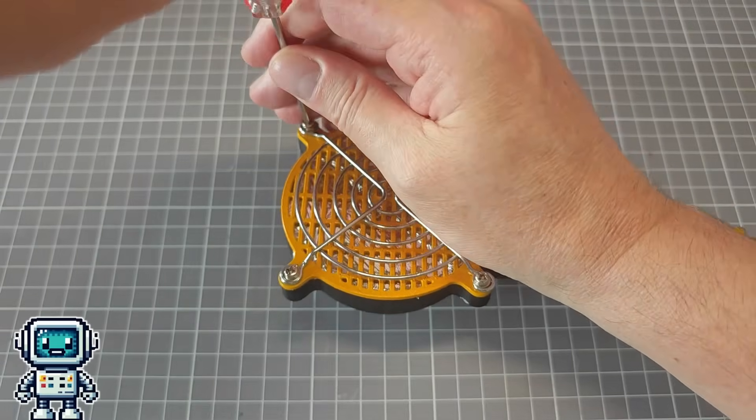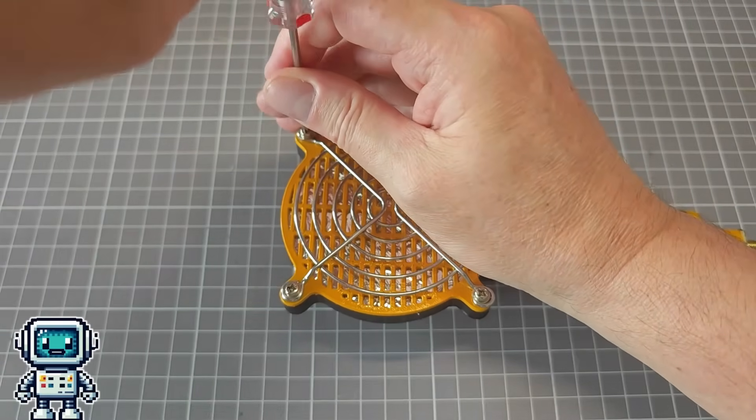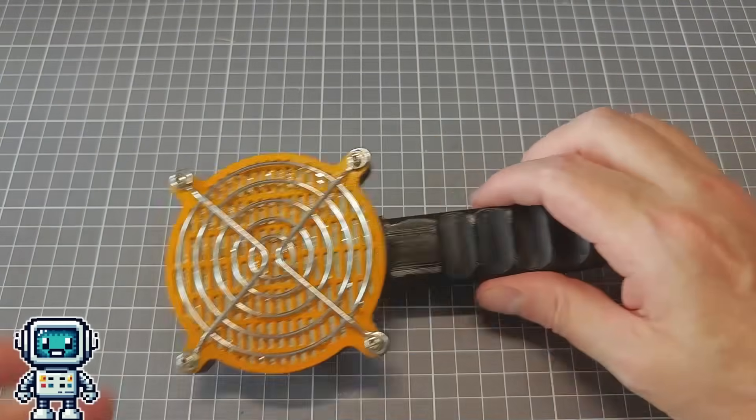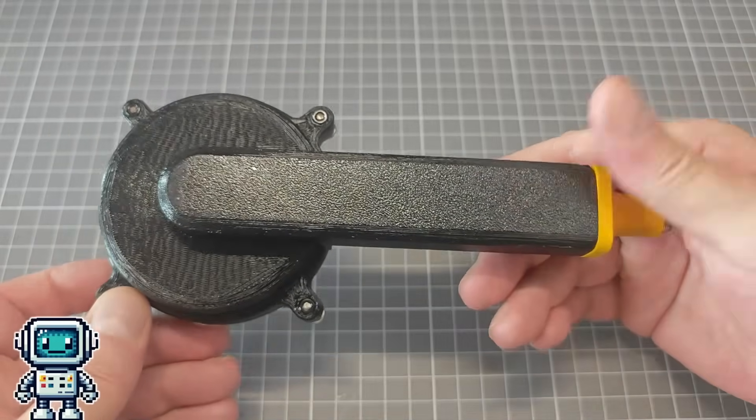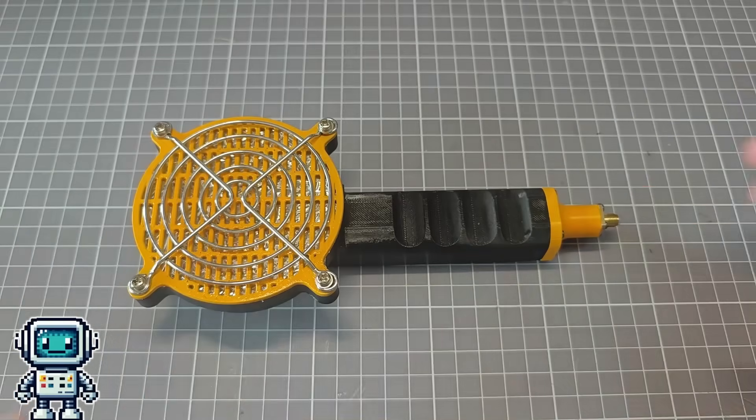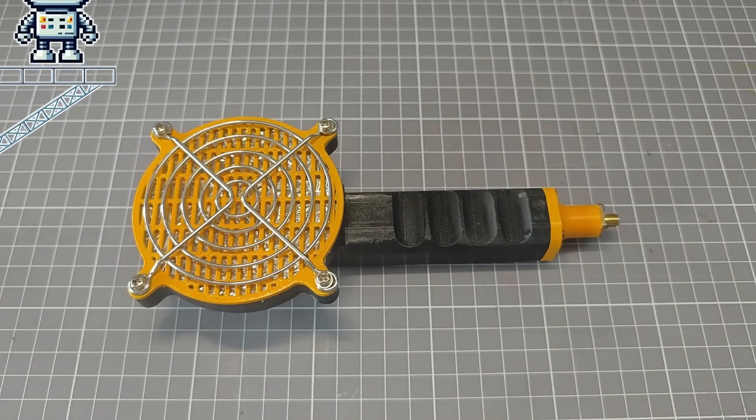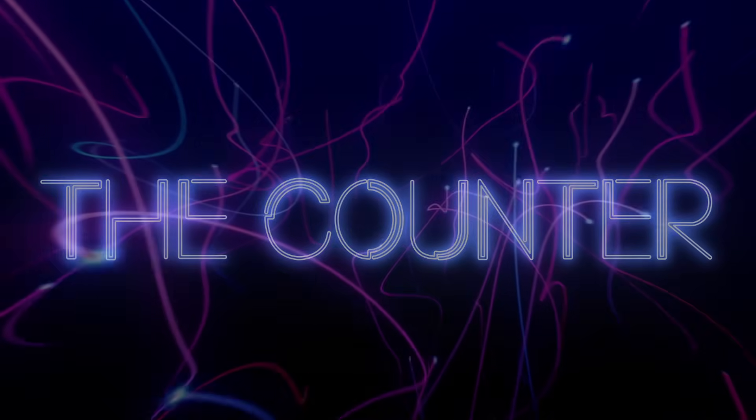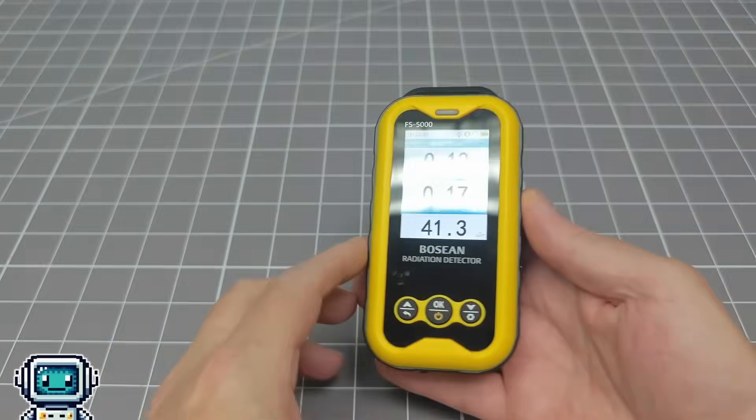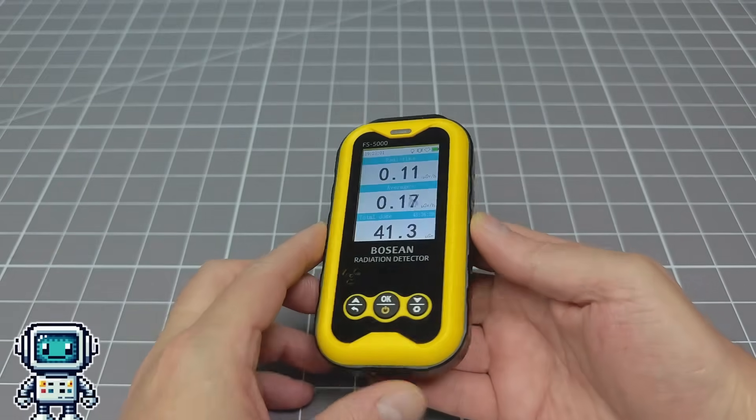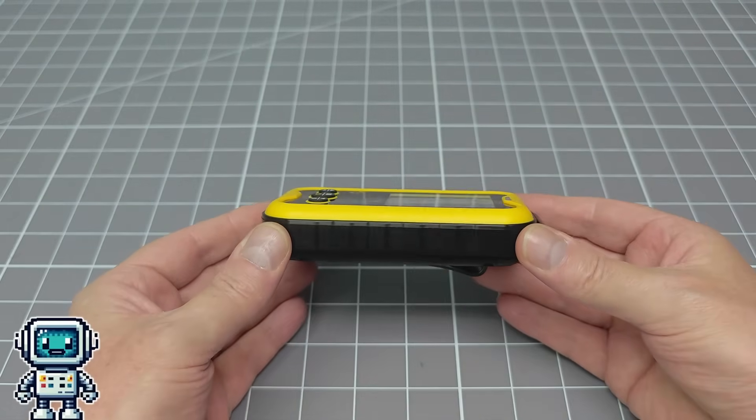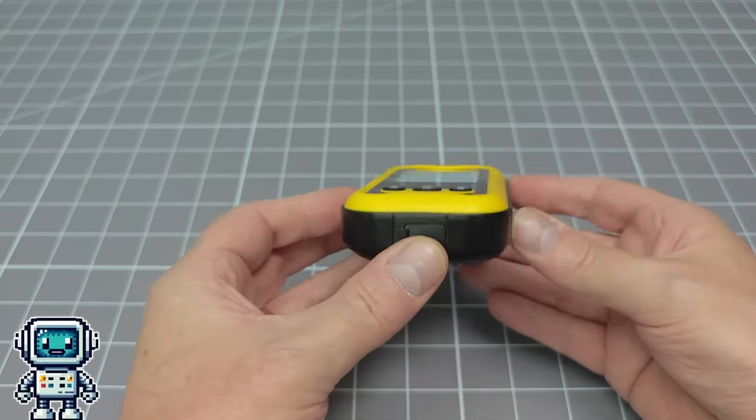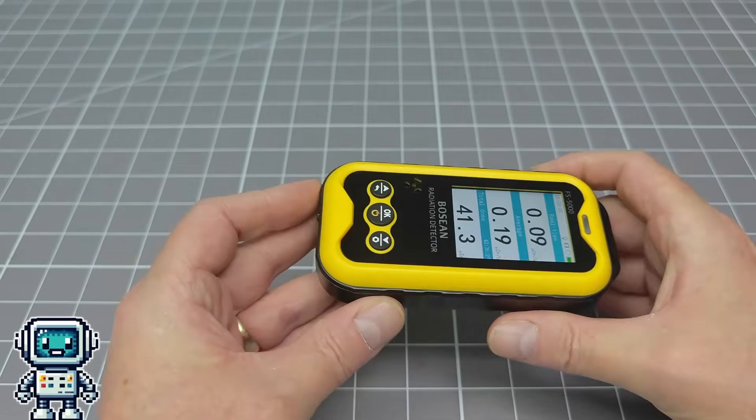With our probe fully constructed, we can now move on to making the changes to the Geiger counter to accommodate this wonderful new detector tube. Now, it is time to make the changes to this cheap Chinese Geiger counter that will allow it to have the option of using an external probe.